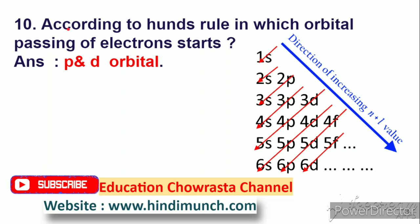Next question: according to Hund's rule, in which orbital does pairing of electrons start? Answer: p and d orbitals.